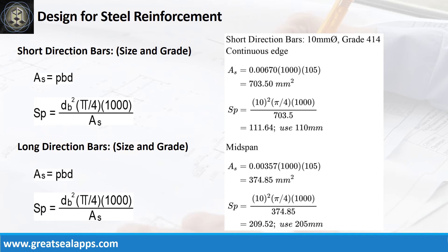At long direction, mid-span: ρ equals 0.00357. b equals 1,000 mm. d equals 105 mm. The area of steel is 374.85 mm². The spacing for 10 mm bar is 205 mm.